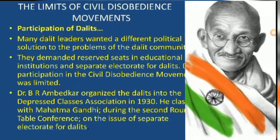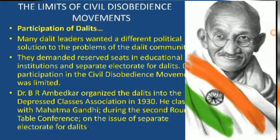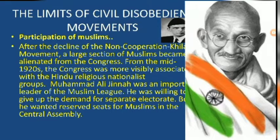There were limits to the Civil Disobedience Movement — participation of Dalits was very limited. Many Dalit leaders wanted a different political solution and demanded reserved seats in educational institutions and separate electorates for Dalits. Dr. B.R. Ambedkar organized the Dalits into the Depressed Classes Association in 1930. He clashed with Mahatma Gandhi during the second Round Table Conference on the issue of separate electorates for Dalits.